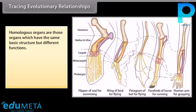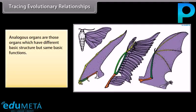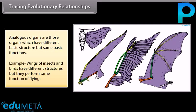Homologous organs are those organs which have the same basic structure but different functions. For example, the four limbs of a frog, bird and man are built from the same basic design of bone, but perform different functions like jumping, flying and grasping. Analogous organs are those organs which have different basic structure but the same basic functions. For example, the wings of insects and birds have different structures but perform the same function of flying.